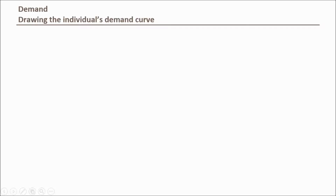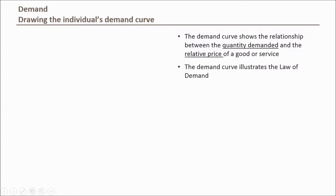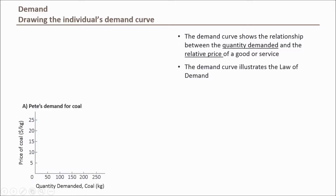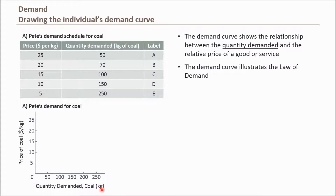Let's start drawing our demand curve. The first thing to discuss is what axes make sense for a demand graph. The first important factor is relative price — it is so important in determining quantity demanded that we need to make it explicit. Note that even though we plot price on the vertical or y-axis, what we're really plotting is relative price. The quantity demanded values are plotted on the horizontal or x-axis. We now have the right axes for our demand graph.